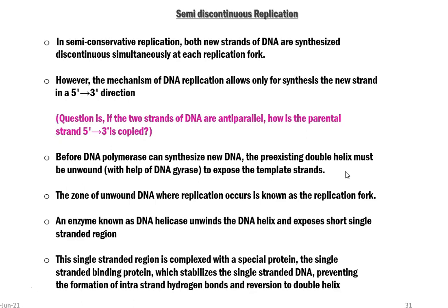The question is: among the two anti-parallel strands of DNA, how is the parental strand that runs 5' to 3' being copied? This is where semi-discontinuous replication plays its role. Before DNA polymerase can synthesize new DNA, the pre-existing double helix must be unwound with the help of DNA gyrase, which removes the negative supercoil and exposes the template strands. The zone of unwound DNA where replication starts is known as the replication fork.